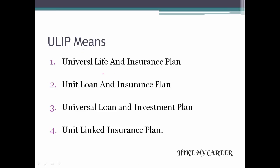This abbreviation is very important — ULIP means: Option 1: Universal Life and Insurance Plan. Option 2: Unit Loan and Insurance Plan. Option 3: Universal Loan and Investment Plan. Option 4: Unit Linked Insurance Plan. Answer is Option 4: Unit Linked Insurance Plan.